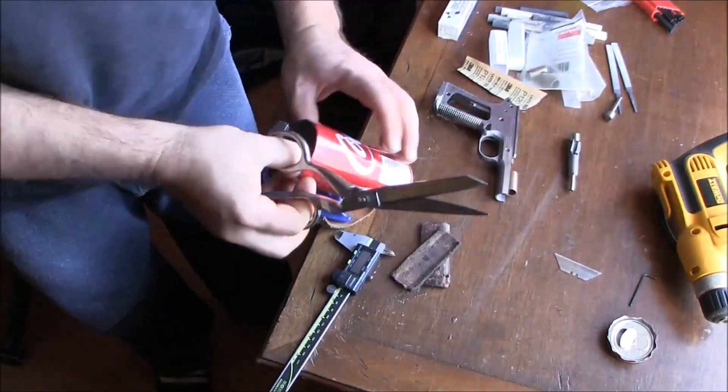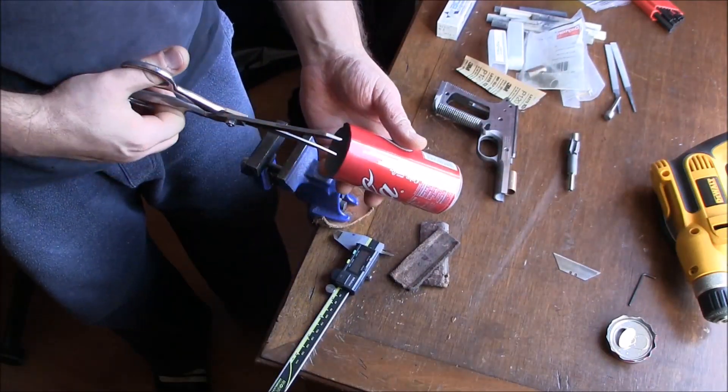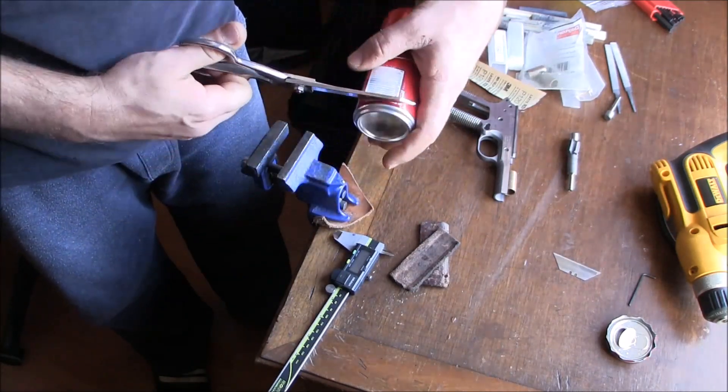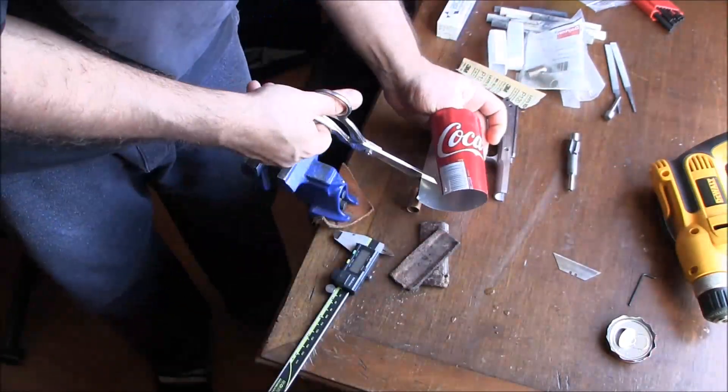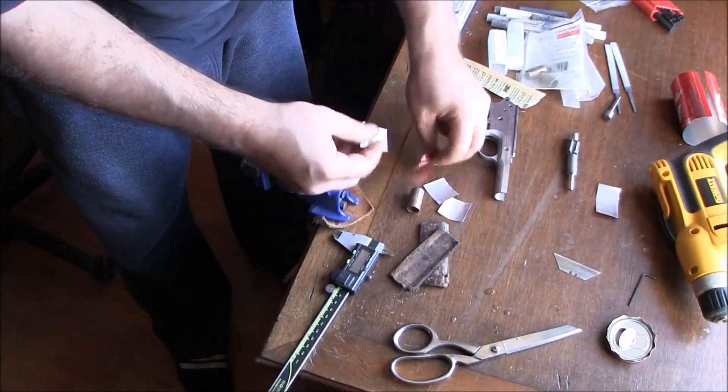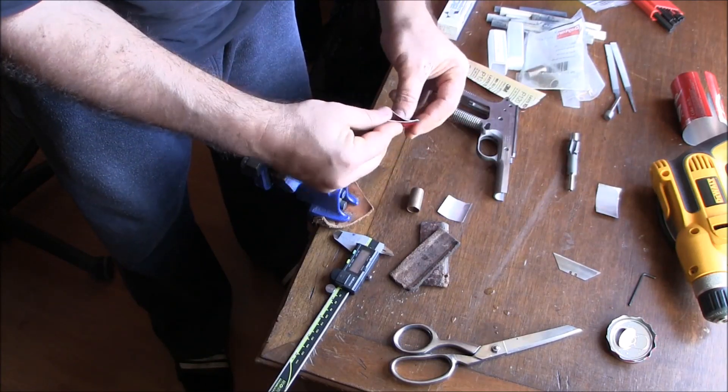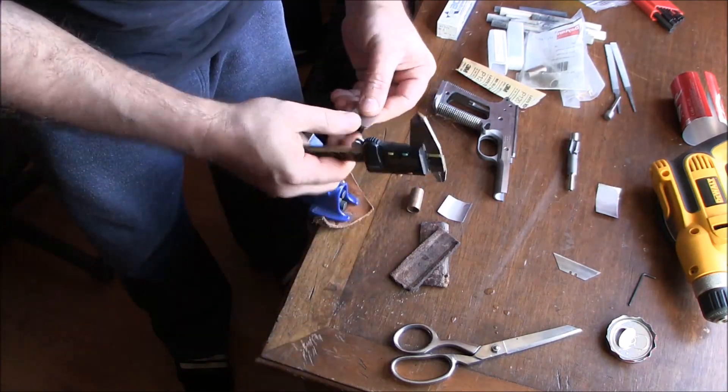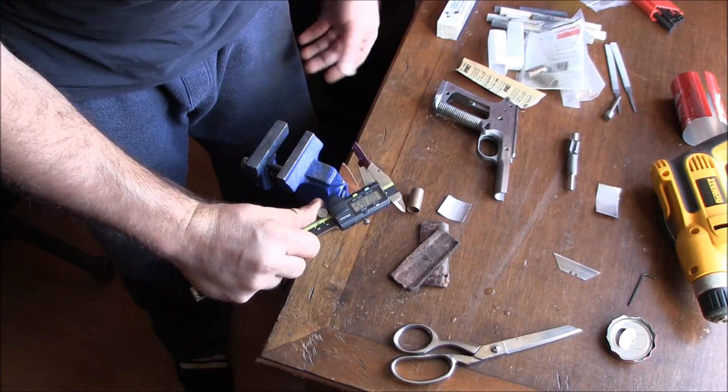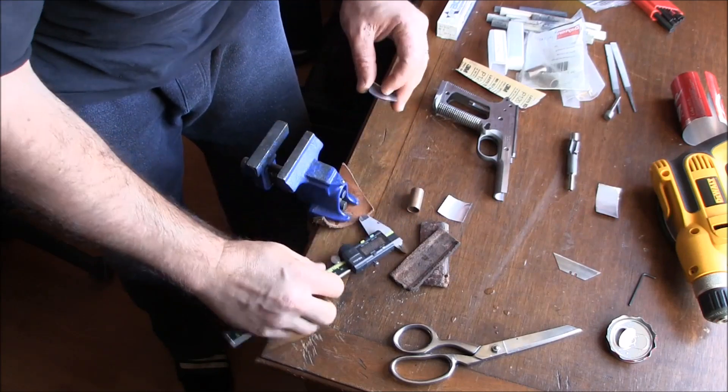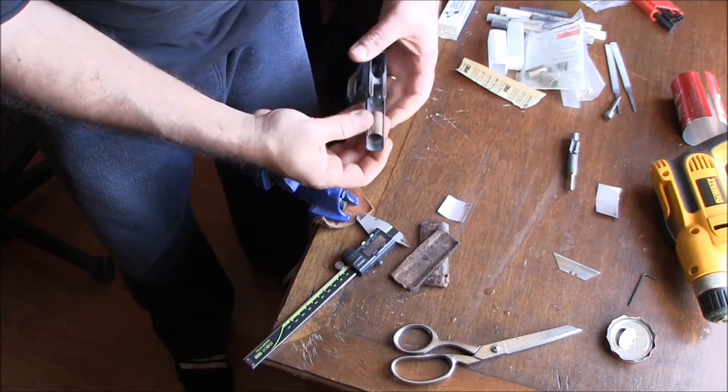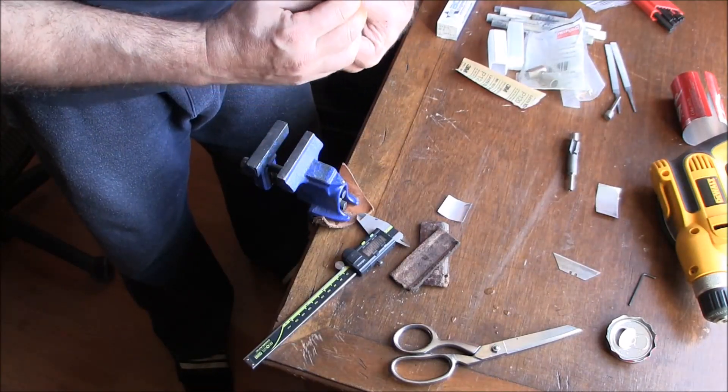I got my soda can. I measured that the thickness of this aluminum is about 4, 4 and a half thousandths. I think I'm going to need 3 layers. If we take these 3 and put them together and measure our thickness, we get 16 and a half basically. I needed 17, so I think that's going to be enough with this bearing. I'm going to measure from the slide stop hole to the edge of the dust cover.